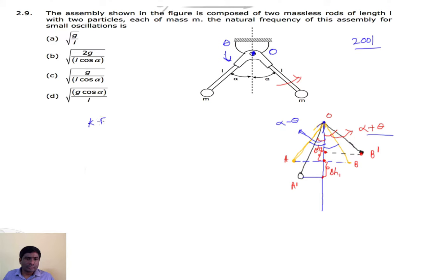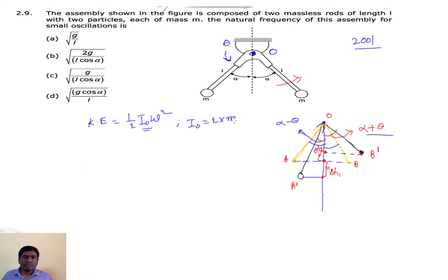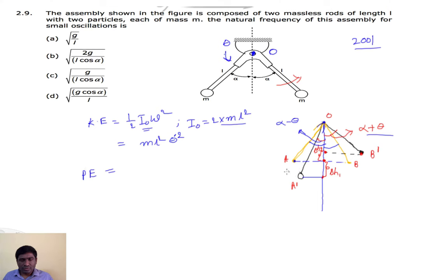We need to find kinetic energy and potential energy. Kinetic energy equals (1/2)·I_naught·omega². The moment of inertia about O for two masses is 2·m·l², so KE equals m·l²·θ̇². For potential energy: mass one descends by delta-h1 (PE decreases, negative term), and mass two rises by delta-h2 (PE increases, positive term).